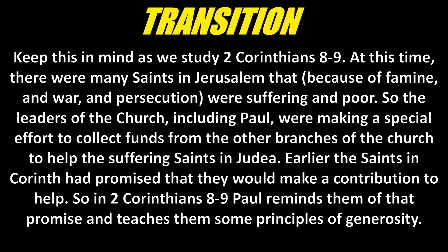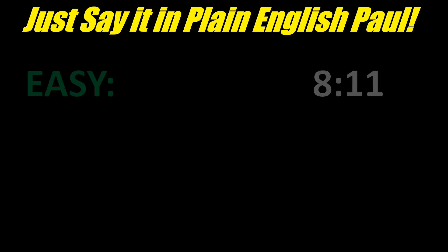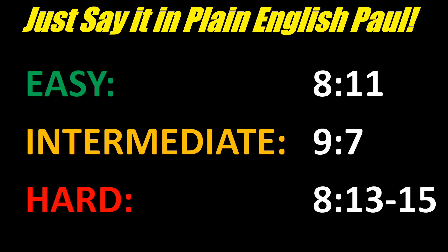To help your students find these principles, give them a challenge I call 'Just Say It in Plain English, Paul.' We all know Paul is a little hard to understand, so this is a good exercise to learn how to interpret him better. Show them a slide and challenge them to pick one verse and translate its meaning into their own words, then give an example of how a person could live that principle today. There are three levels depending on confidence: easy is chapter 8 verse 11, intermediate is chapter 9 verse 7, and hard is chapter 8 verses 13 through 15. When students feel challenged, they put in more effort.